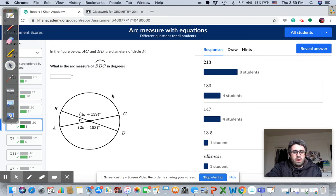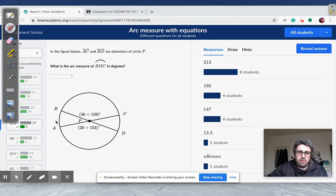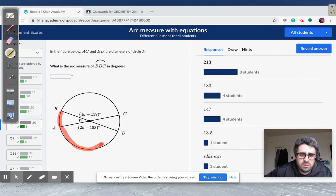All right. So in this problem, it says, again, AC and BD are diameters of circle P. That's important. So we know that AC and BD are diameters. So I could say this whole thing here is equal to 180. And so is this whole piece. So is this piece. So we know a lot about the circle. What is the arc measure of BDC? So B, D, C. That's the one over here. B, D, C. Again, I'm going in the order of the middle point listed. All right. So we want that.